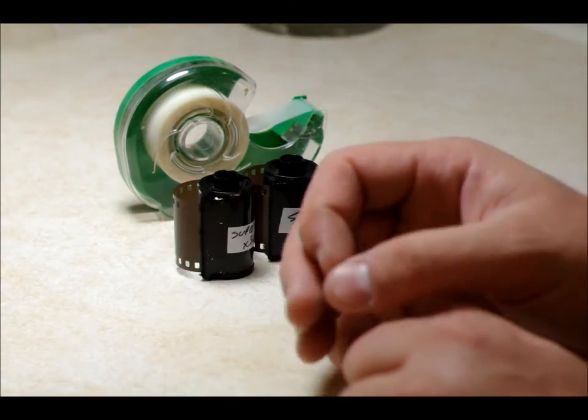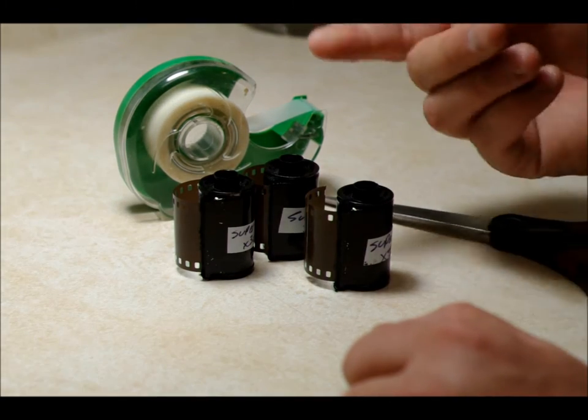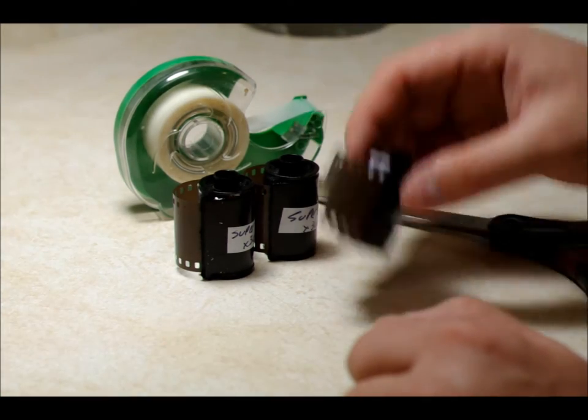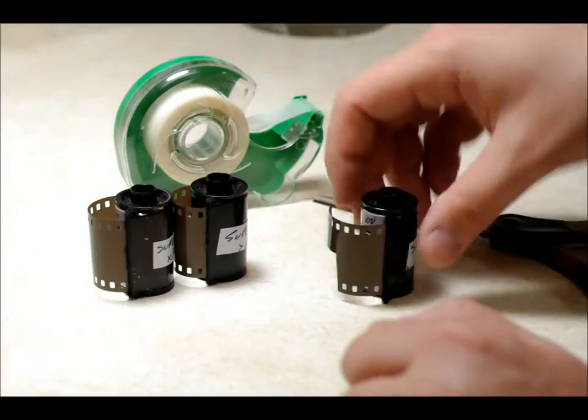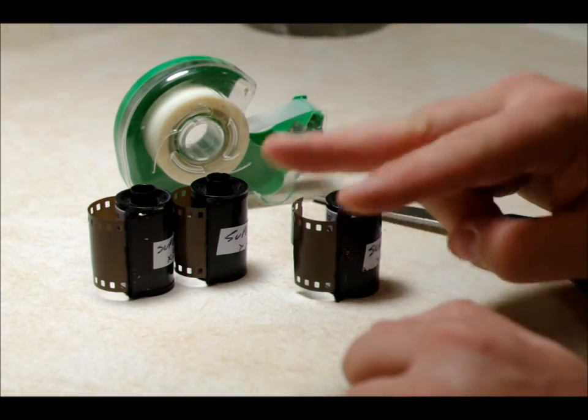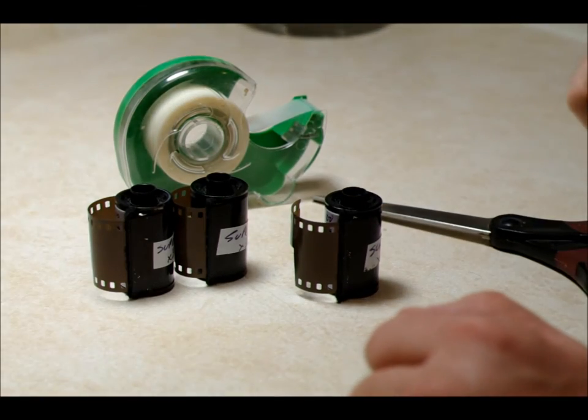As I understand it, it was discovered by large format photographers who accidentally put their film in backwards and found that it had an interesting effect. But it's popular for 35 millimeter and it can have some interesting effects. So I have three rolls of film here that are all shot. What I'm going to do is show you how to re-spool in two different ways, 35 millimeter film for red scale photography.